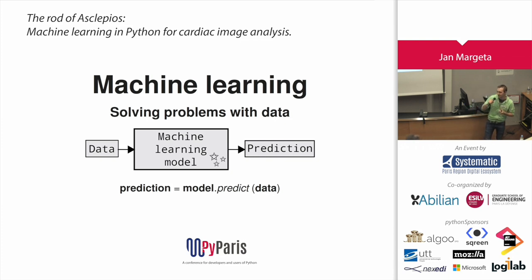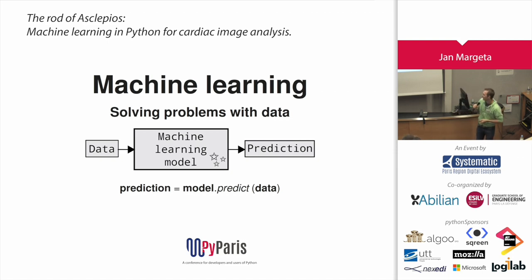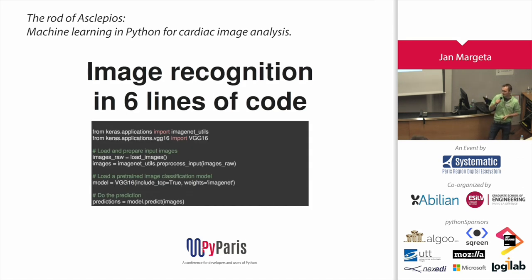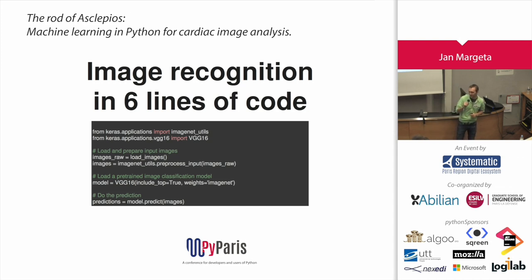You start with a collection of data — for example, images of the heart. And then you have another collection, which we can call the ground truth — the doctor's annotations linked to the images. Now the magic comes: you build your machine learning model and you make predictions. In six lines of Python code you can get state-of-the-art performance in image recognition. This is using a library called Keras, which is based on convolutional neural networks.